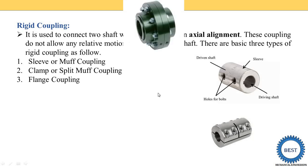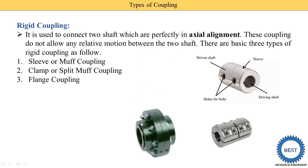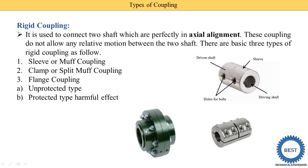The third type is the flange coupling. Here you see the diagram of flange coupling. In a flange coupling there are again two parts: one is called the unprotected type and the second one is the protected type.